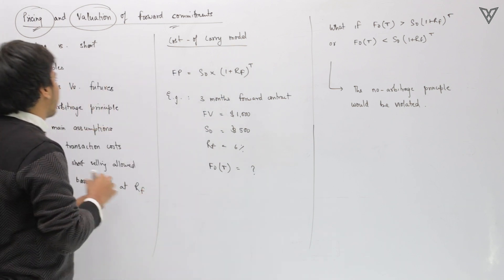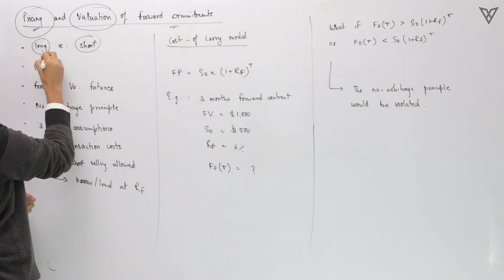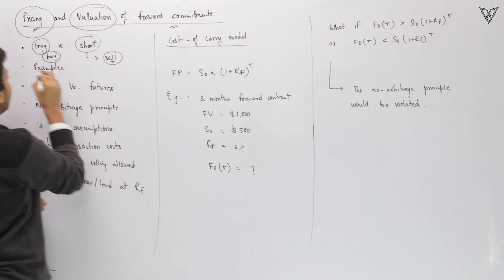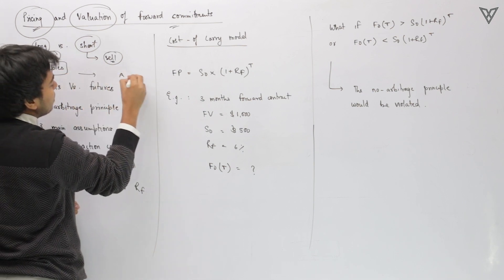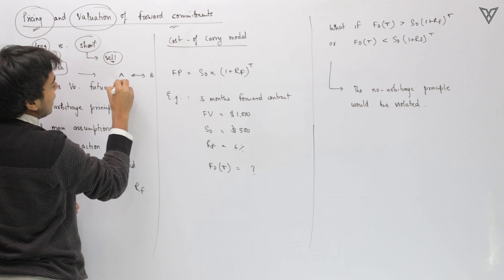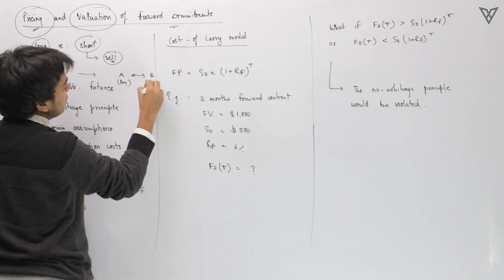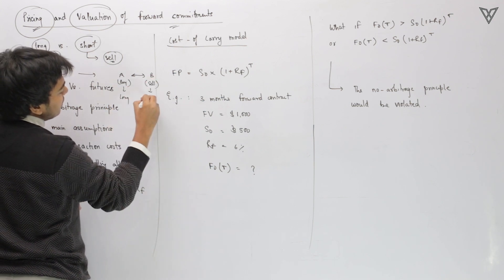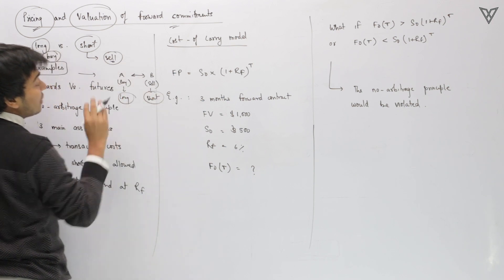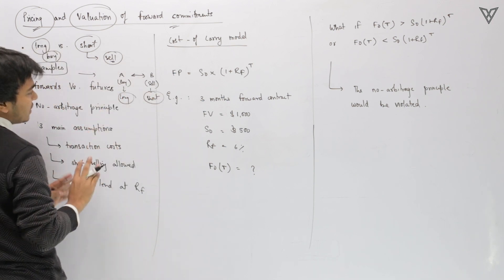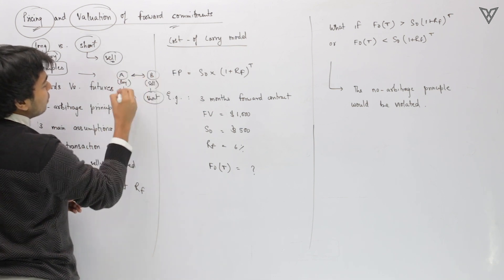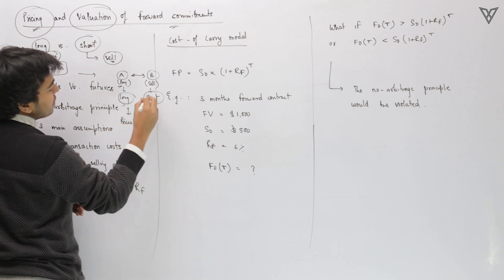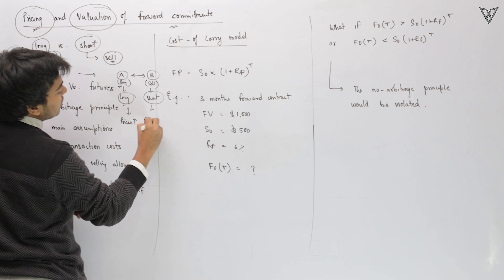The long party is basically agreeing to buy something and the short party is basically agreeing to sell something. The person who agrees to buy is the long person, and the one who agrees to sell is the short person. Person A would be entering this contract because he thinks the prices will go up, and person B is agreeing to enter because he thinks the prices will go down.